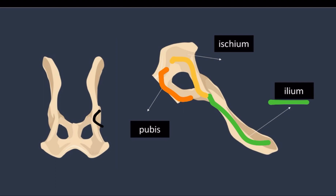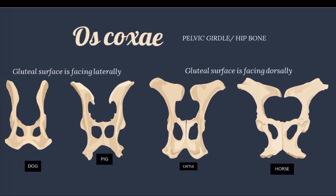The acetabulum is the concavity articulating with the femoral head. It is formed by the fusion of ilium, ischium, pubes, and acetabular bone. The obturator foramen is the largest opening at the floor of the os coxae. The os coxae is the largest flat bone in the body.